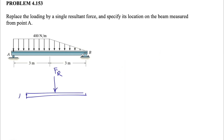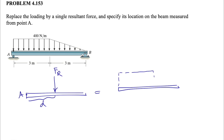Now the second part of the question asks us to replace the loading by a single resultant force and specify its location on the beam measured from point A. We need to find the distance d from point A where a single force FR produces the same effect as the original distributed loading system — the rectangle on the left and the right triangle on the right.